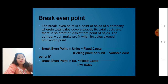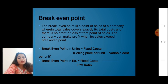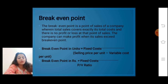Next is break-even point. Break-even point is the point of sales of the company wherein total sales cover exactly its total cost, and there is no profit, no loss. The company can make profit when its sales exceed the break-even point. The formula for break-even point in units is: fixed cost upon selling price per unit minus variable cost. Break-even point in rupees is equal to fixed cost upon PV ratio.